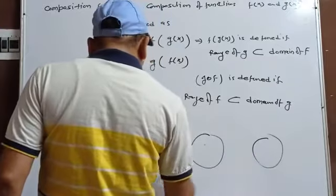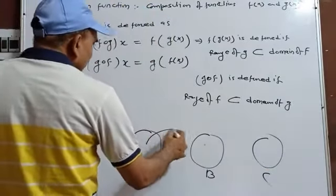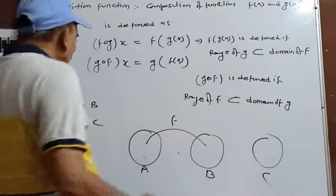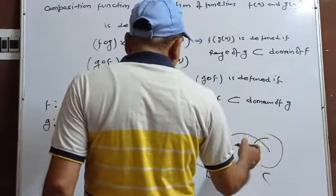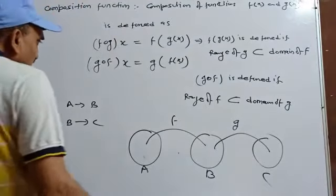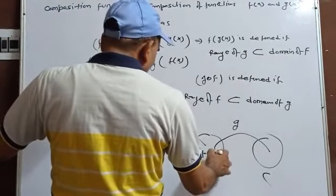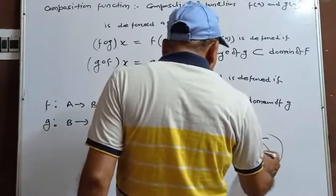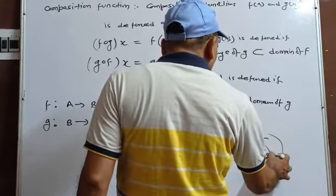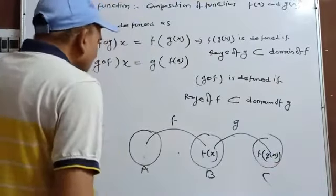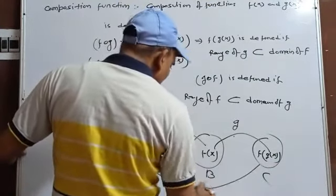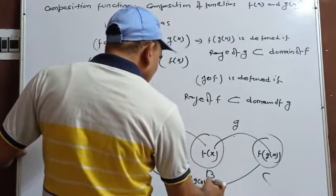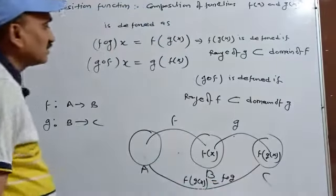We have sets A, B, and C. f maps from A to B, and g maps from B to C. Applying g first gives g(x), then applying f gives f(g(x)). So going directly from A to C gives us f(g(x)), which we call fog(x).